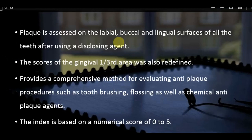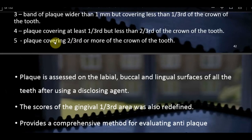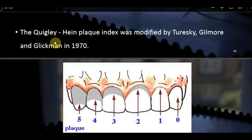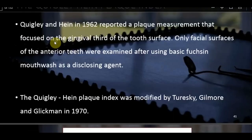In the Turesky-Gilmore-Glickman modification, not just the facial surface but also lingual and labial surfaces were examined, and posterior teeth were included. The original Quigley-Hein Index examined only the facial surface of anterior teeth, while the 1970 modification extended to all teeth with lingual and labial surfaces.